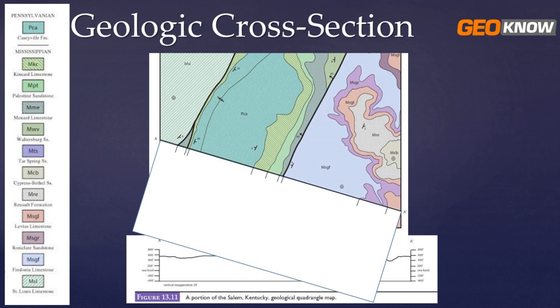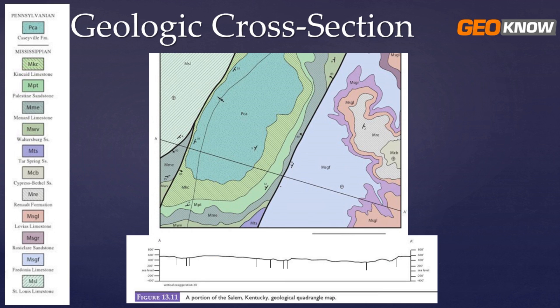So once you've got those tick marks, you're going to take them to your geologic topographic profile down below. In this case, they've actually given us the topographic profile, which means from A to A prime it's just showing the elevation of the surface. If you don't know how to construct a topographic profile, that's also going to be very important for you to know — I'll leave a link in the description below for a video I created on how to do that. In this case, they've already drawn it for us, which was very nice.